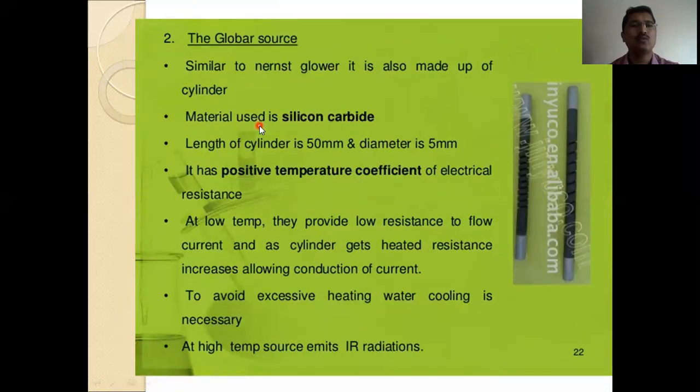The Globar source, similar to the Nernst glower, it is also made up of cylinder. Material used is silicon carbide. You can see here, length of the cylinder is 50 mm and diameter is 5 mm. It has a positive temperature coefficient of the electrical resistance. At low temperature, they provide low resistance to flow current, and as the cylinder gets heated resistance increases allowing the conduction of current. To avoid the excess heating, water cooling is necessary. At high temperature source, emits higher radiations.